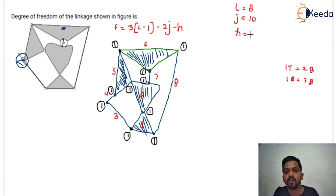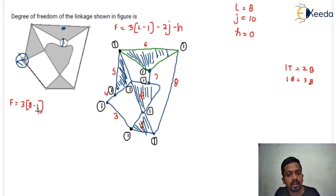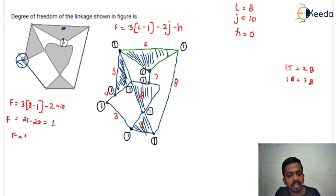How many higher pairs are there — is there any point contact or line contact? No, there is no point contact or line contact, so that would be zero higher pairs. You just have to put the values in the equation: F = 3(8 - 1) - 2 × 10 = 21 - 20 = 1. So the degree of freedom is equal to one, which means the number of possible motions is one.